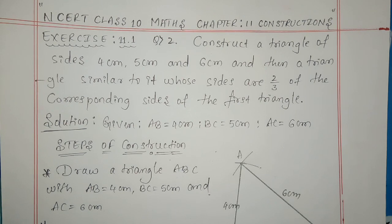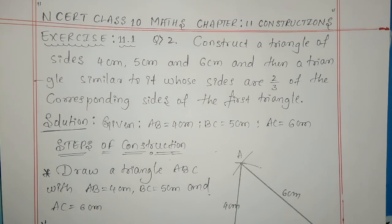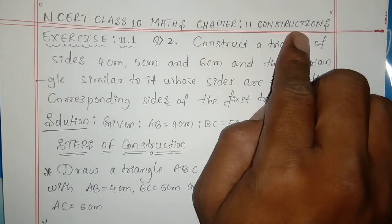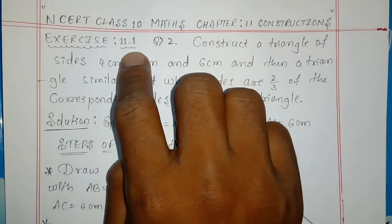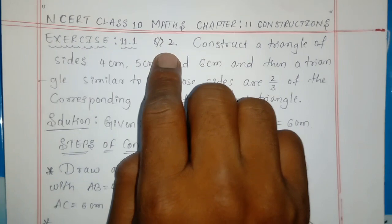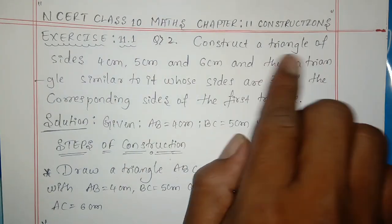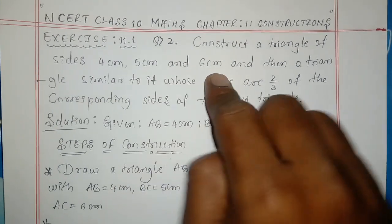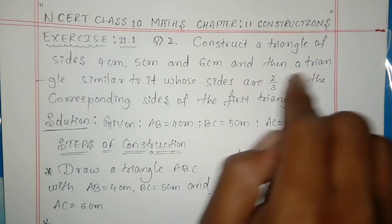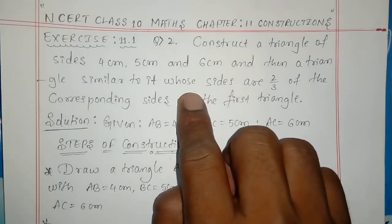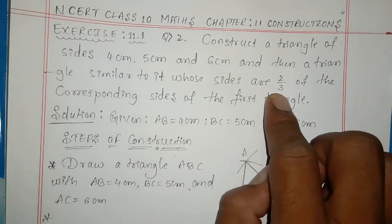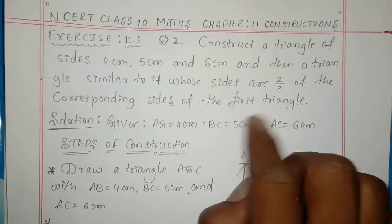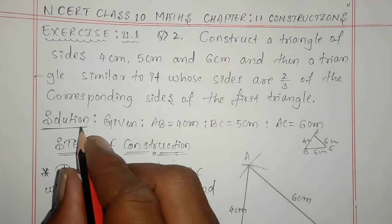Welcome to Shivagisa's YouTube channel. Today I will discuss chapter 11, that is Construction. Exercise 11.1, question number two: construct a triangle of sides four centimeter, five centimeter, and six centimeter, and then a triangle similar to it whose two sides are two by three of the corresponding sides of the first triangle. Solution: